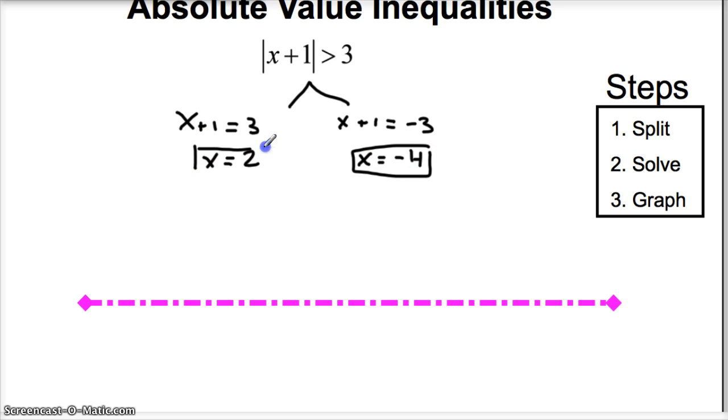Those are our two critical points that we're going to plot on our graph. So, let's put it down here. We got negative 4 over here. We got a 2 over here. And we look at our symbol now to figure out which direction we're going in. Let's see, this is a greater than symbol. Greater than, if you remember, goes outwards.